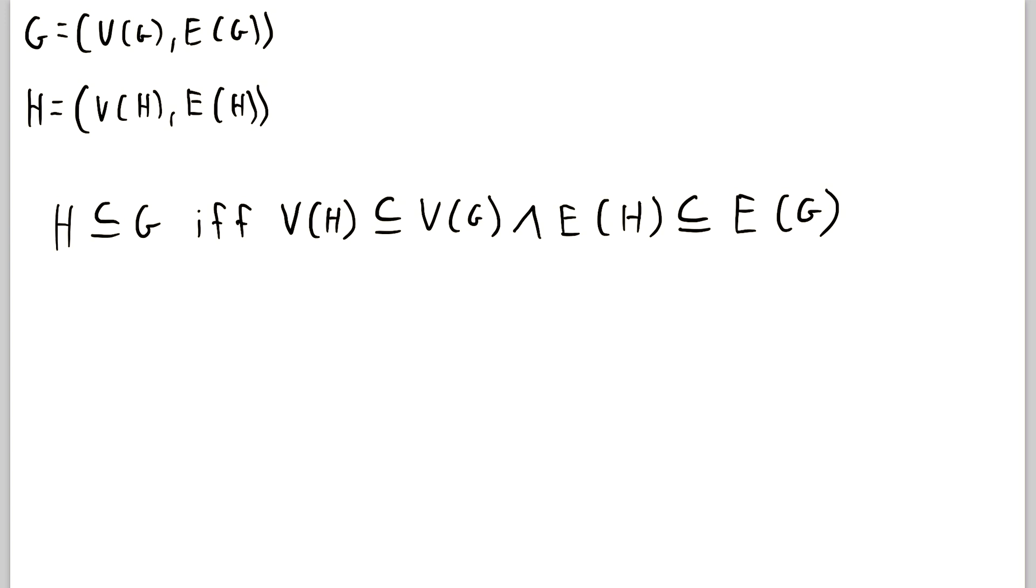But what do we have to change about this definition or add in order to define spanning subgraphs? Well, it's actually not too complicated. So we have H is a spanning subgraph of G if and only if, and then here's where the change comes, we're going to erase the subset sign and put an equals sign. So H is a spanning subgraph of G if and only if the vertex set of H is equal to the vertex set of G. And then we still have our other piece of the subgraph definition saying that the edge set of H is a subset of the edge set of G. So H is a spanning subgraph of G if H is a subgraph of G and its vertex set is equal to the vertex set of G.